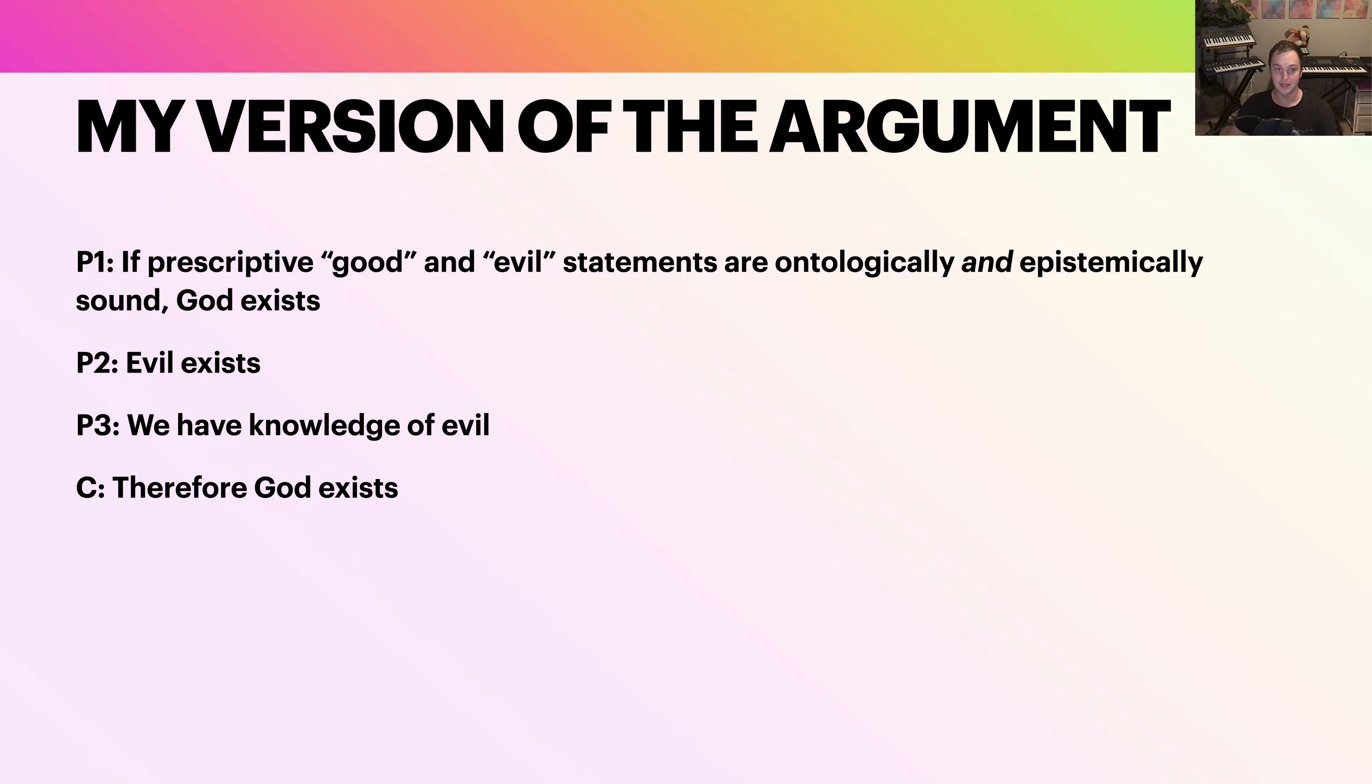And then here's the part: evil exists—this is the ontological piece. We have knowledge of evil. It's not enough to just propose that evil exists, we have to come to know it. That would be premise three, that's the epistemic part. You can argue we have a sense of evil, we just know some things are wrong a priori, kind of like a priori truths. Therefore, God exists because we have knowledge of evil and we assume evil exists. But both evil has to exist and we have to somehow come to know it.